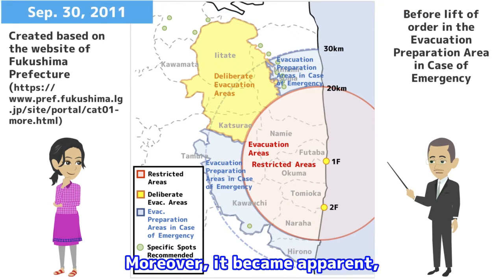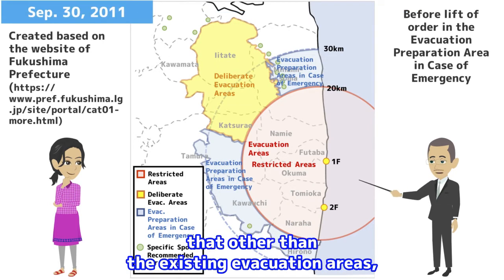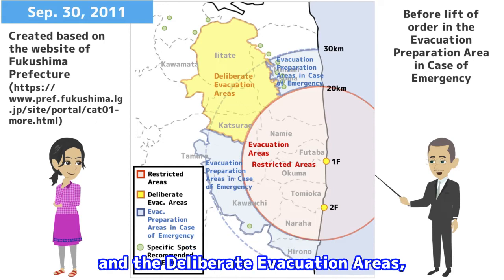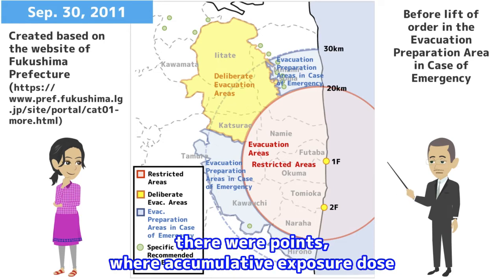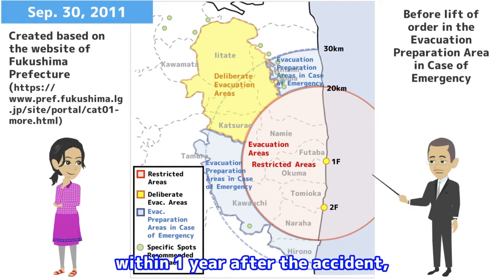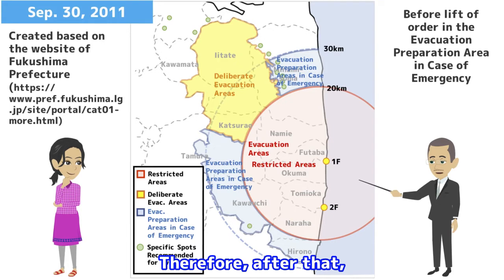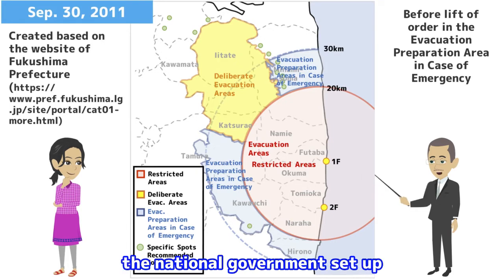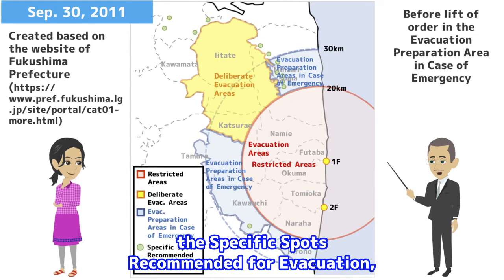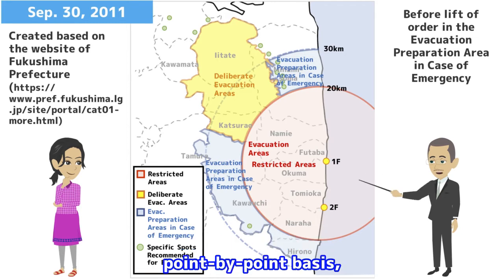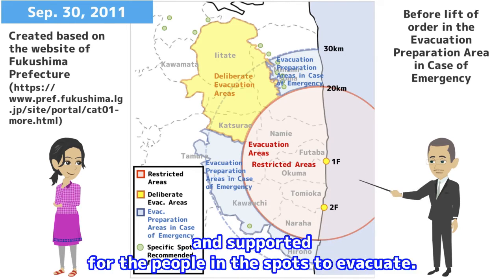Moreover, it became apparent that other than the existing evacuation areas and the deliberate evacuation areas, there were points where a cumulative exposure dose within one year after the accident could exceed 20 mSv per year. Therefore, the national government set up specific spots recommended for evacuation on a point-by-point basis, and supported people in those spots to evacuate.